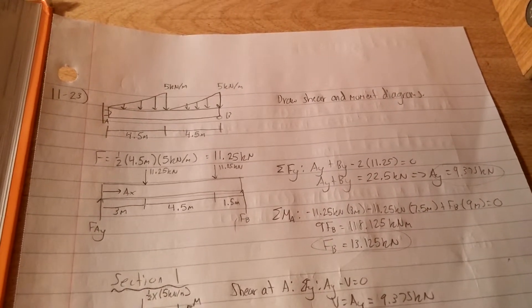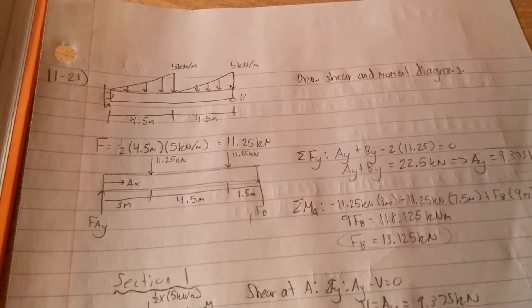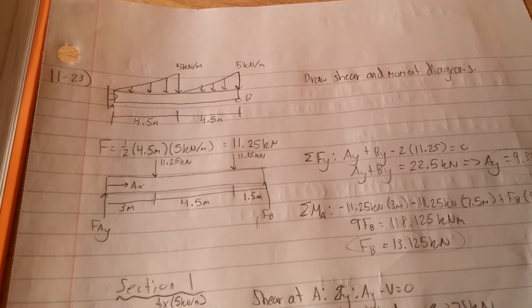When we go to our moment equation, we're going to take it about A, so we don't have to worry about AY or AX, because they pass through the line of action, so the moment is zero there.